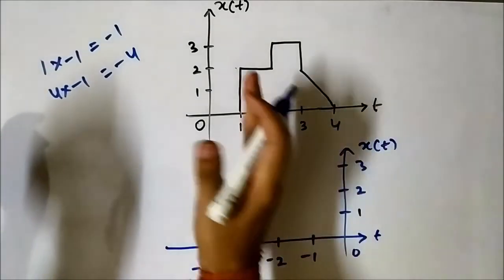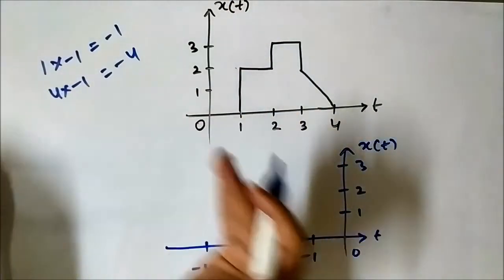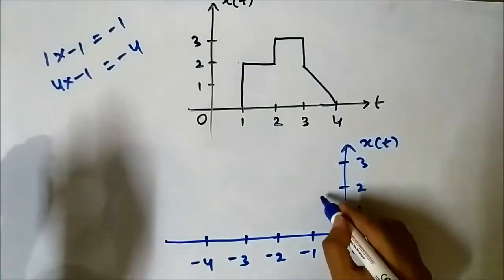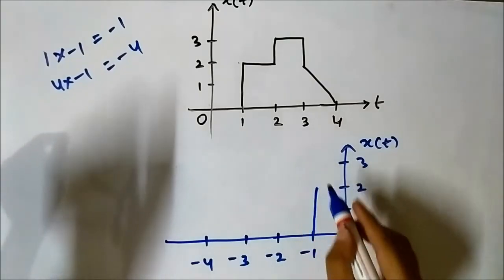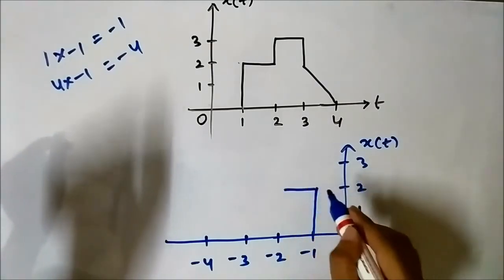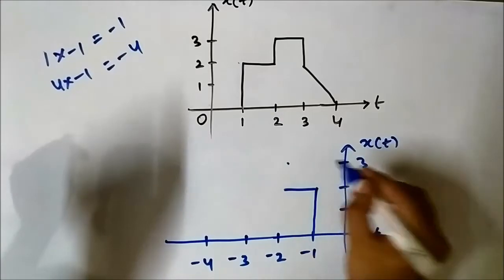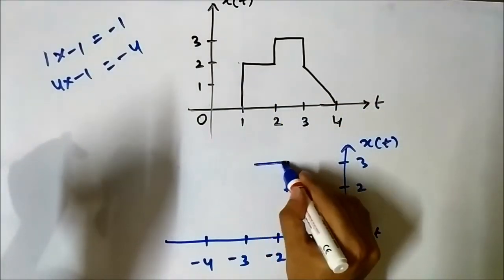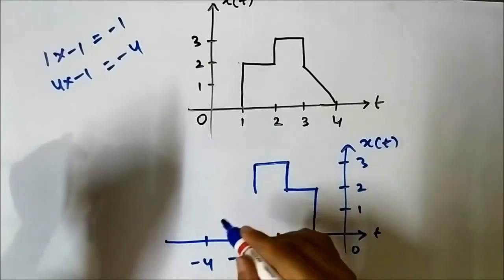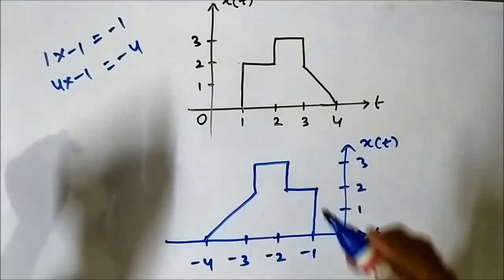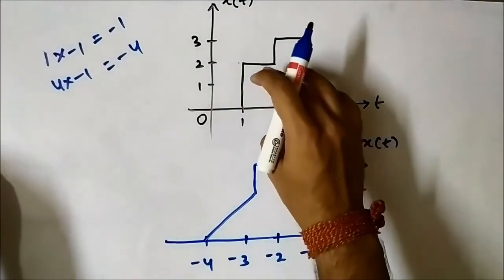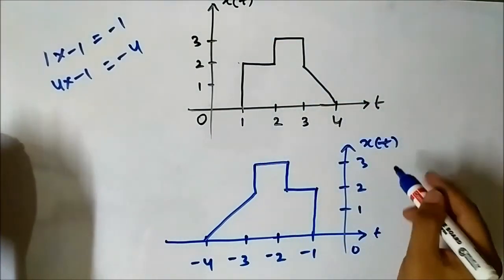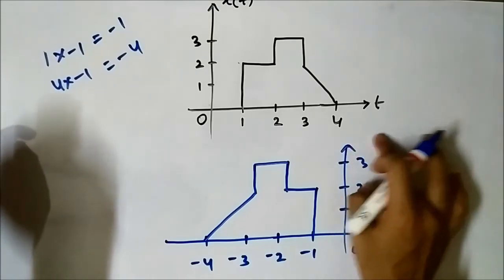The time-reversed signal starts in the same way but in the opposite direction — here it starts from 1, and in the reversed version it starts from minus 1, like this, following the same shape. Comparing the original signal and the time-reversed version x(-t): these two are exactly the mirror images of each other about the vertical axis.